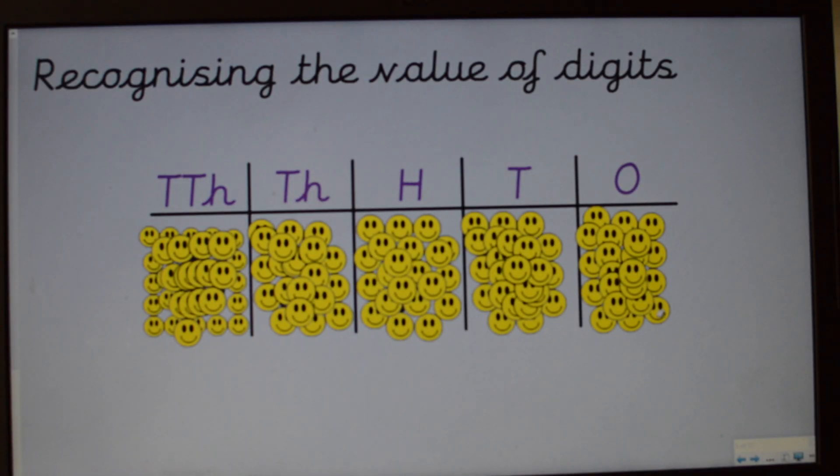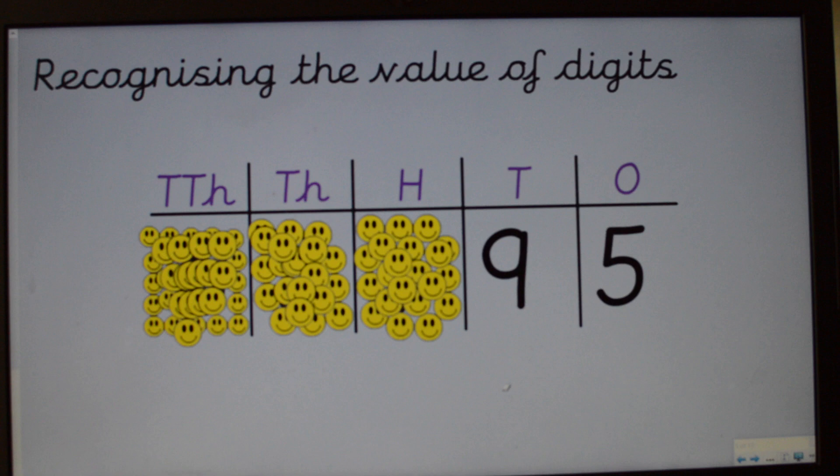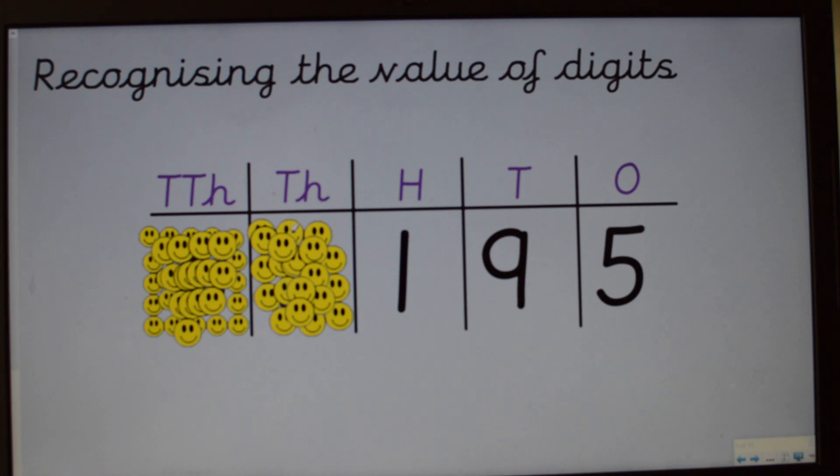Okay, so I mentioned at the beginning that some of you might be able to move on to five-digit numbers. This time, we've got an extra column. Now, the TTH stands for tens of thousands. So let's remove some of these smiley faces to see what number I have created. Okay, five ones makes five. Nine tens and five ones makes ninety-five. One hundred, nine tens and five ones makes one hundred and ninety-five. Brilliant. Three thousands, one hundred, nine tens and five ones makes three thousand, one hundred and ninety-five.